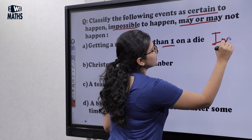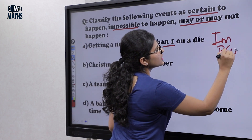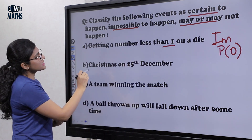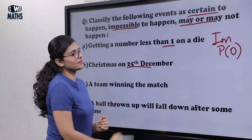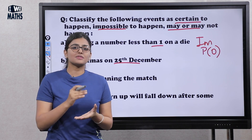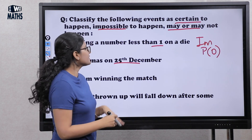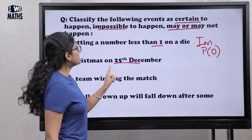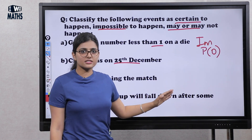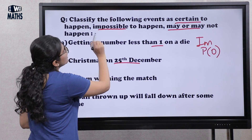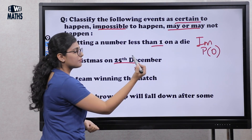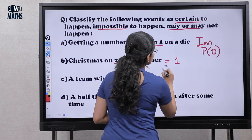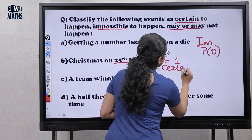The probability is zero — impossible event. The next is Christmas on 25th December. We know that worldwide Christmas is celebrated on 25th December, so there is no other date it can be on. So definitely Christmas will be on 25th December. This is a certain event — it will definitely happen. So the probability of this is one.